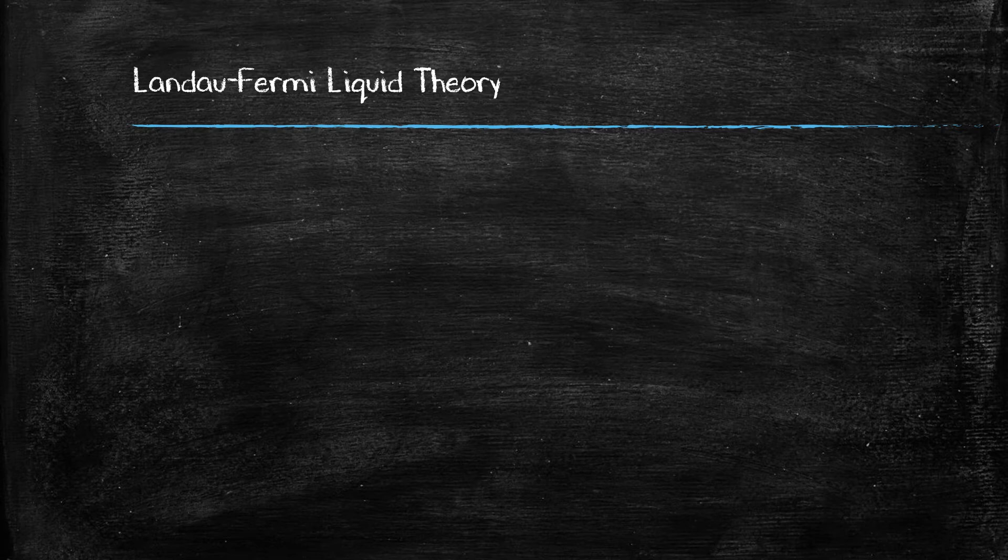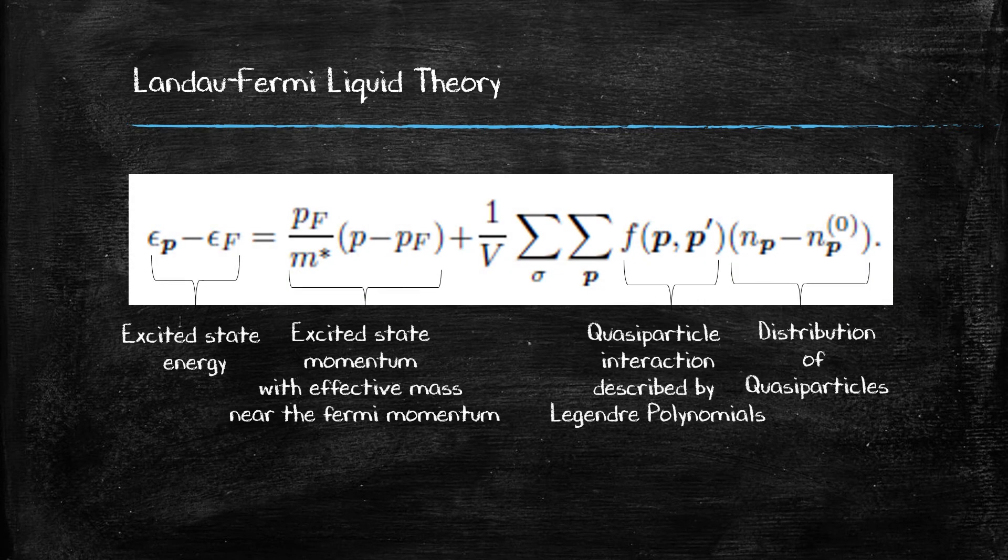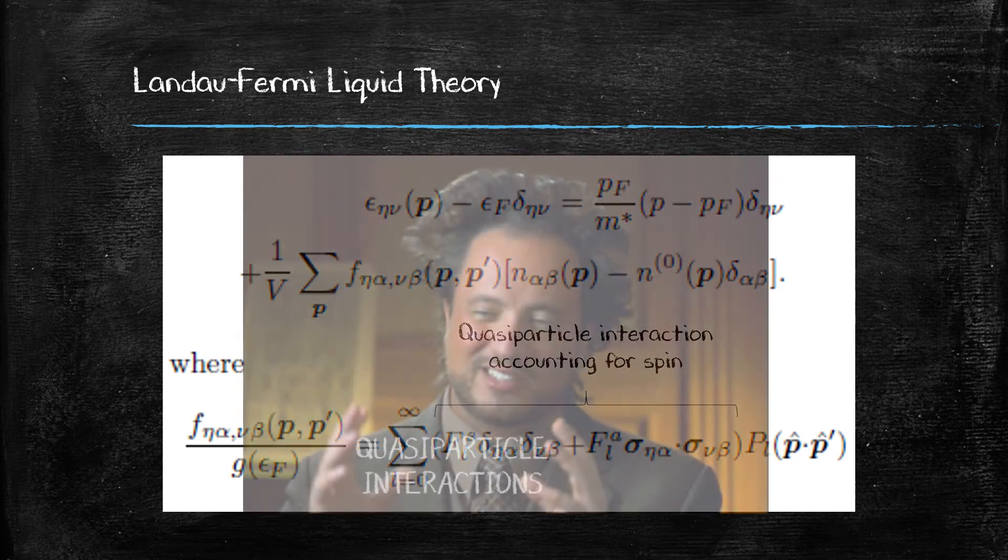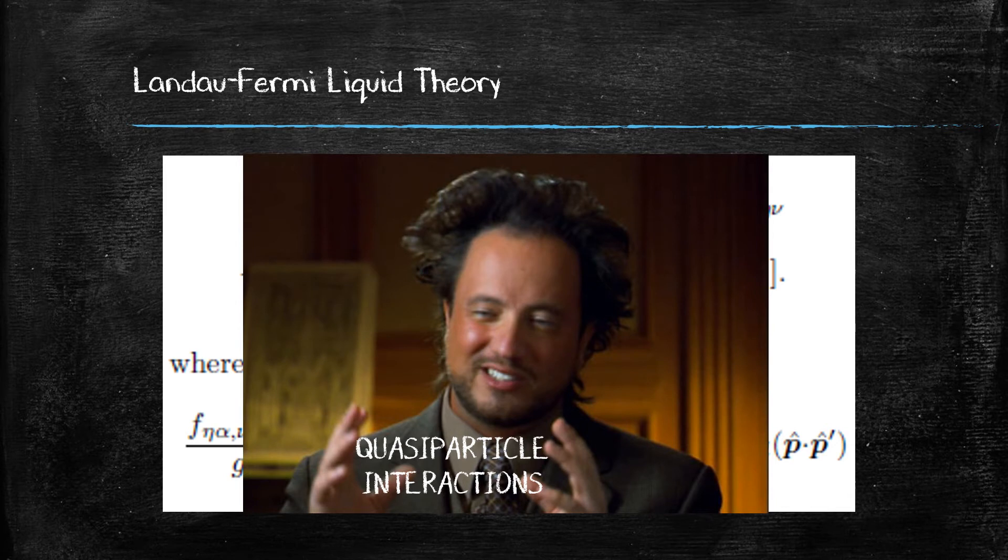This can all be described by this equation shown here, where we have an effective mass, a quasi-particle interaction, and quasi-particle distribution. This is enough math to make your head want to spin, and this is all before even adding the spin component of the equation, which can be shown here. It may seem like a bunch of hoopla to be talking about quasi-particle interactions at this point, so we should just try to simplify, like Landau did.